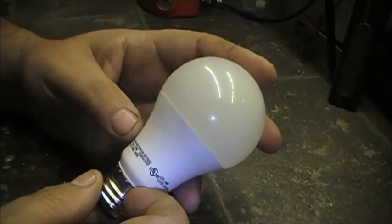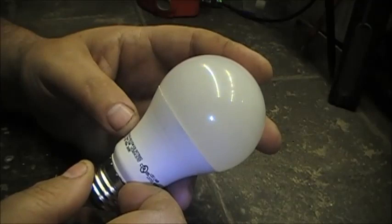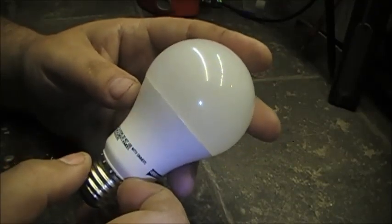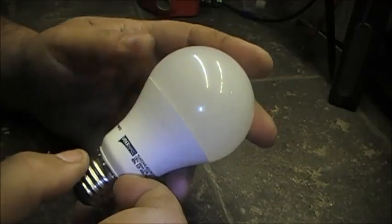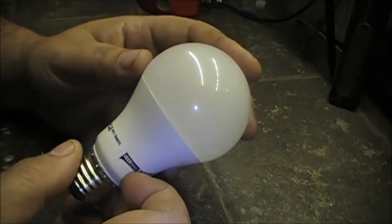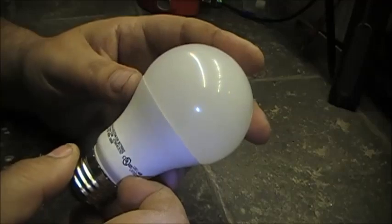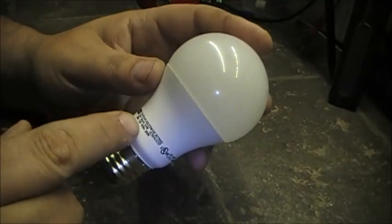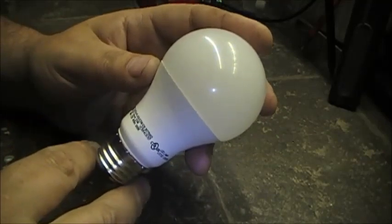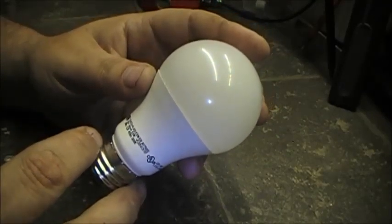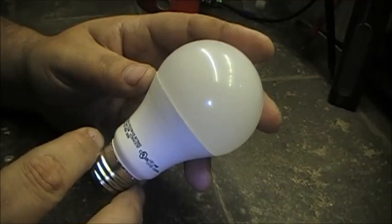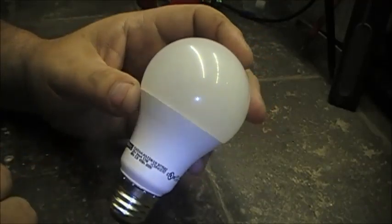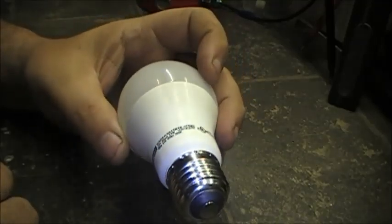This is a, what the hell is this thing? Does it say anywhere on there? Do not use with dimmers. 120 volts, 95 milliamp, 5.5 watts, 60 Hertz. So 5.5 watts, it's a 5.5 watt bulb.